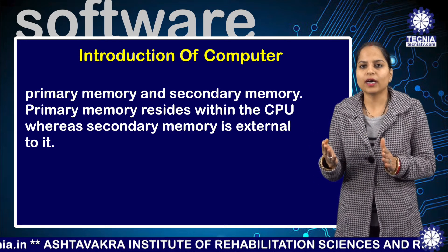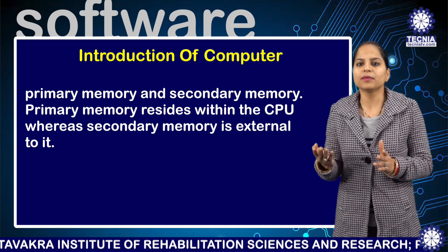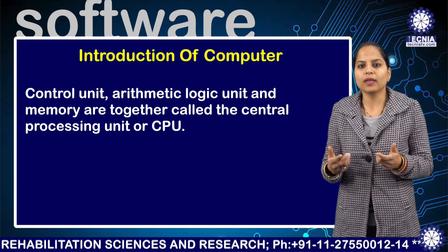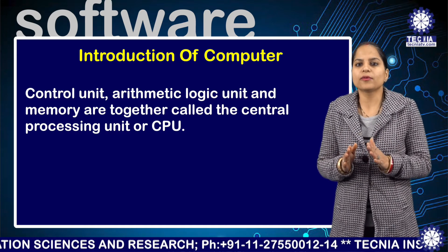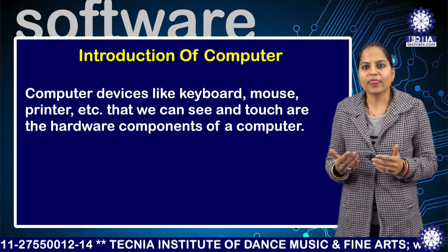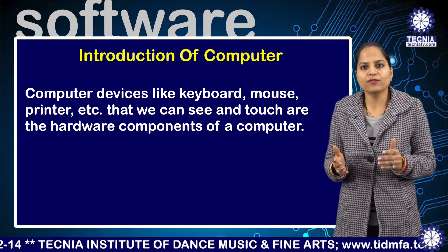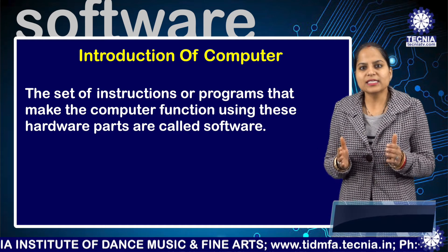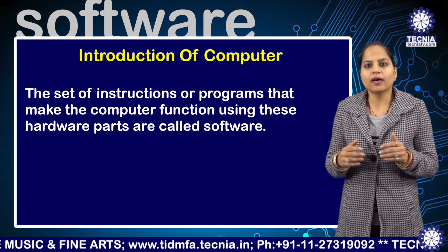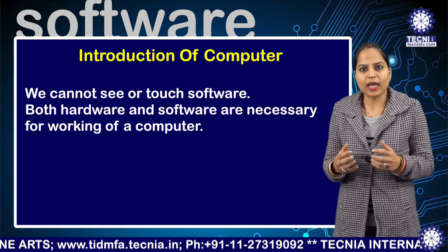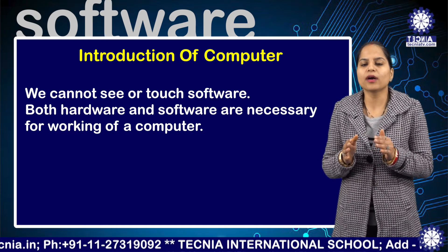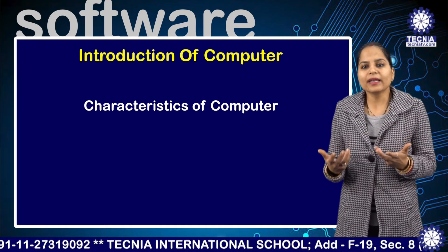Primary memory is also called internal memory, and secondary memory is also called external memory. Control unit, arithmetic logical unit, and memory are together called the central processing unit. Computer devices like keyboard, mouse, printer, etc. that we can use and touch are the hardware components of a computer. The set of instructions or programs that make the computer function using the hardware parts are called software. We cannot see or touch software. Both hardware and software are necessary for the proper working of a computer.